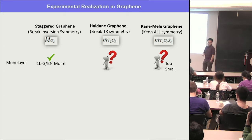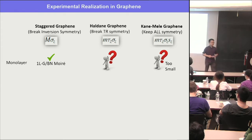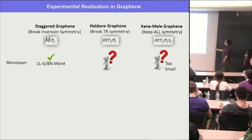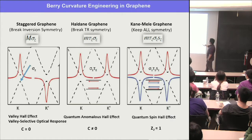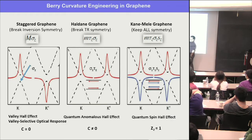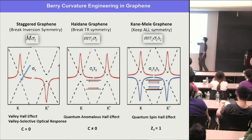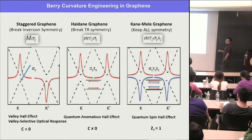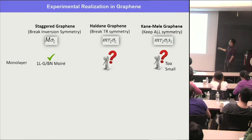Monolayer graphene is very difficult to open a gap. It can be done using boron nitride, which creates a moiré pattern and opens a gap described by the M sigma_z staggered term. But nobody knows how to introduce the Haldane term or the Kane-Mele term in graphene. The Haldane term breaks time-reversal symmetry. The Kane-Mele term breaks no symmetry — it keeps all symmetries — but it's just too small in graphene to be experimentally realized.